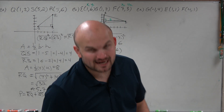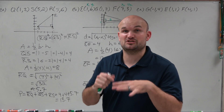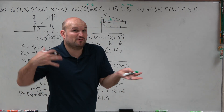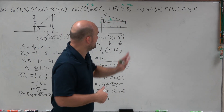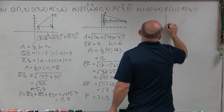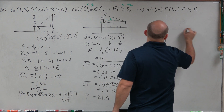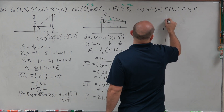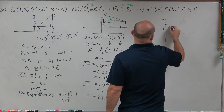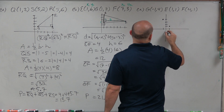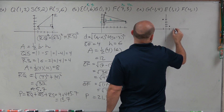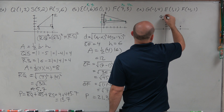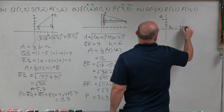All right, last but not least, let's go through this one — I'll try to quicken this up. First, before we know what we're dealing with, we've got to plot the points. We have G at (-1, 4), E at (1, 1), and F at (4, 1).